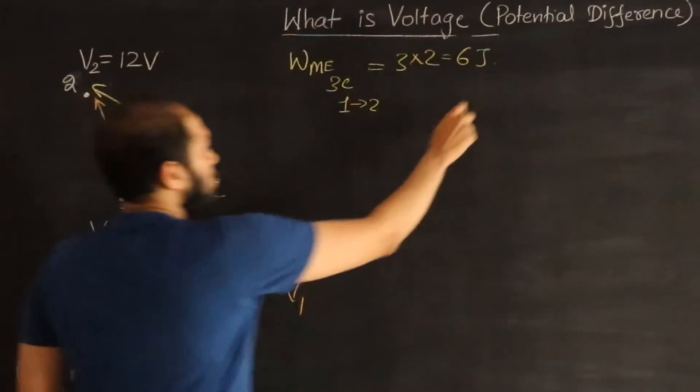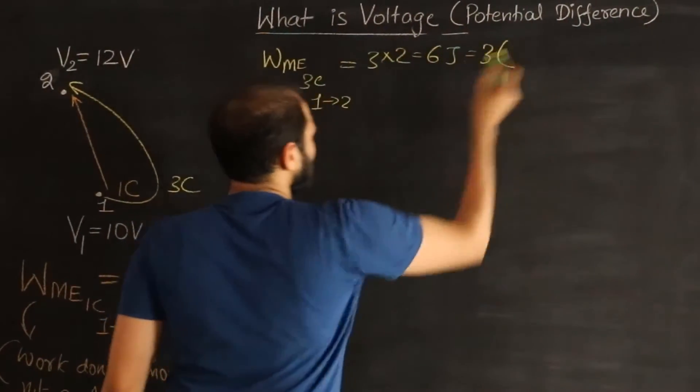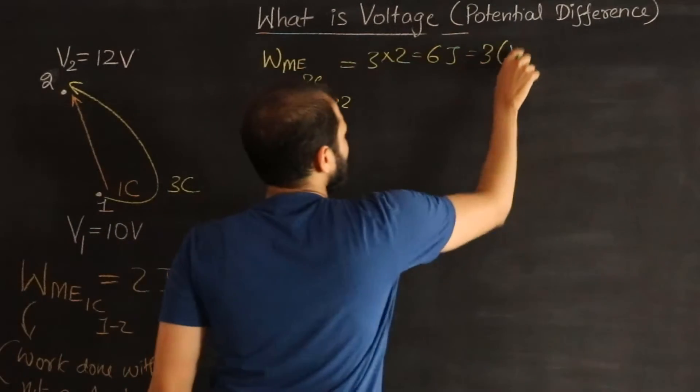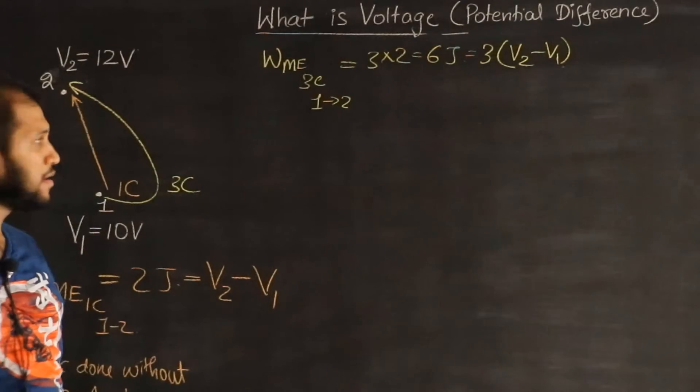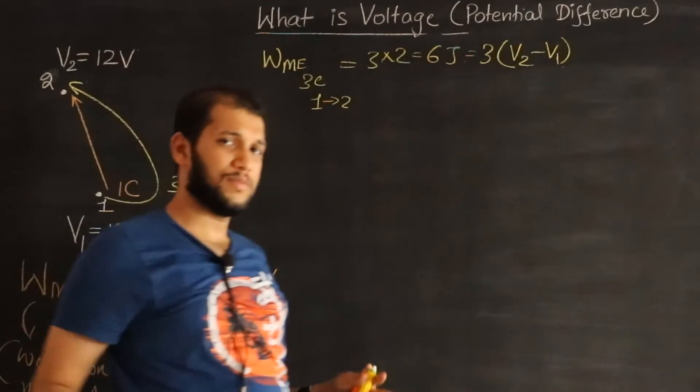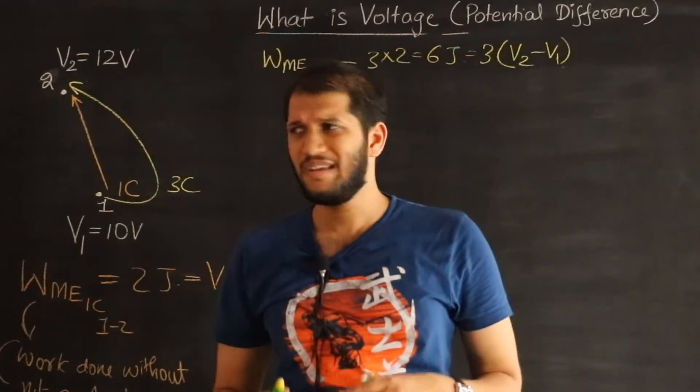In other words, all I have to do is 3 times V2 minus V1. What if instead of moving 3 coulombs or 4 coulombs or whatever that is, what if you move a charge in general?